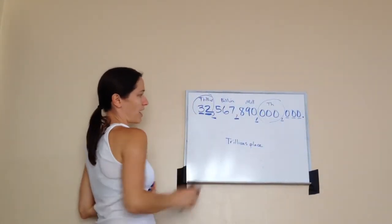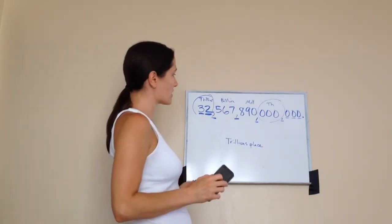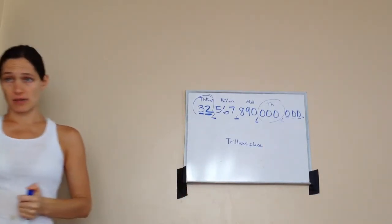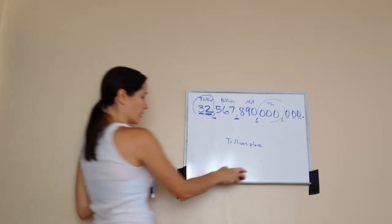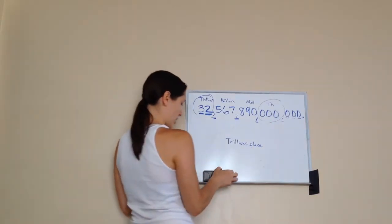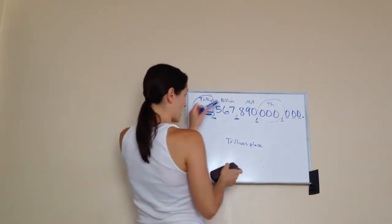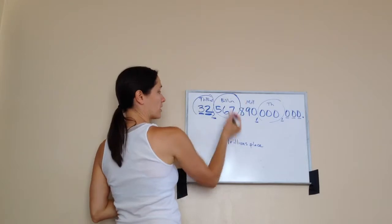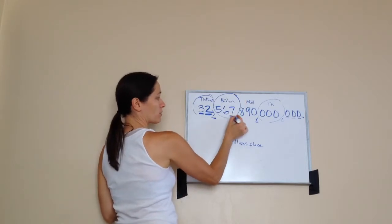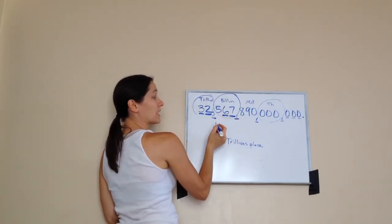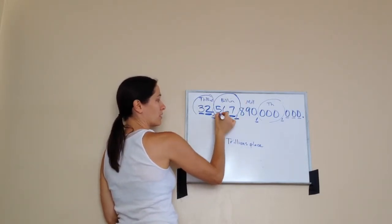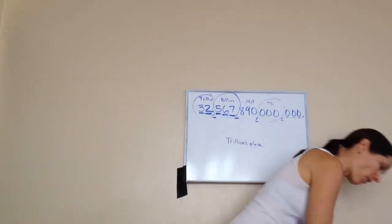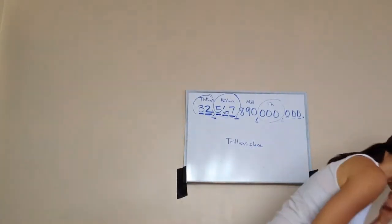If I asked you, Isaac, which digit is in the ten billions place? Six. Very good. He got the clue of the billions group right there, and he knew that this one was billions, this one was ten billions, and then this one would be hundred billions. Very good, Isaac.